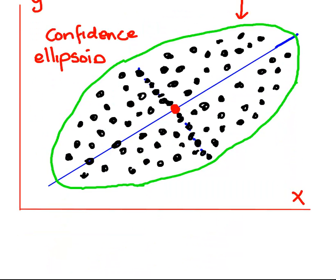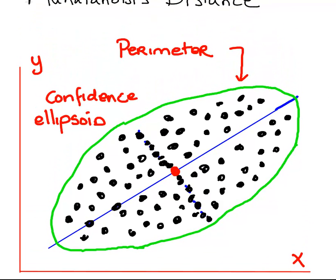It actually got accidentally deleted some of it there. So let's just ignore the confidence part here — it's an ellipsoid, an ellipse. Essentially it's a perimeter around our main set of data points. Something that is often closely connected to the Mahalanobis distance is this matter of a confidence ellipsoid. A confidence ellipsoid is essentially a confidence interval for two-dimensional space, or n-dimensional space.